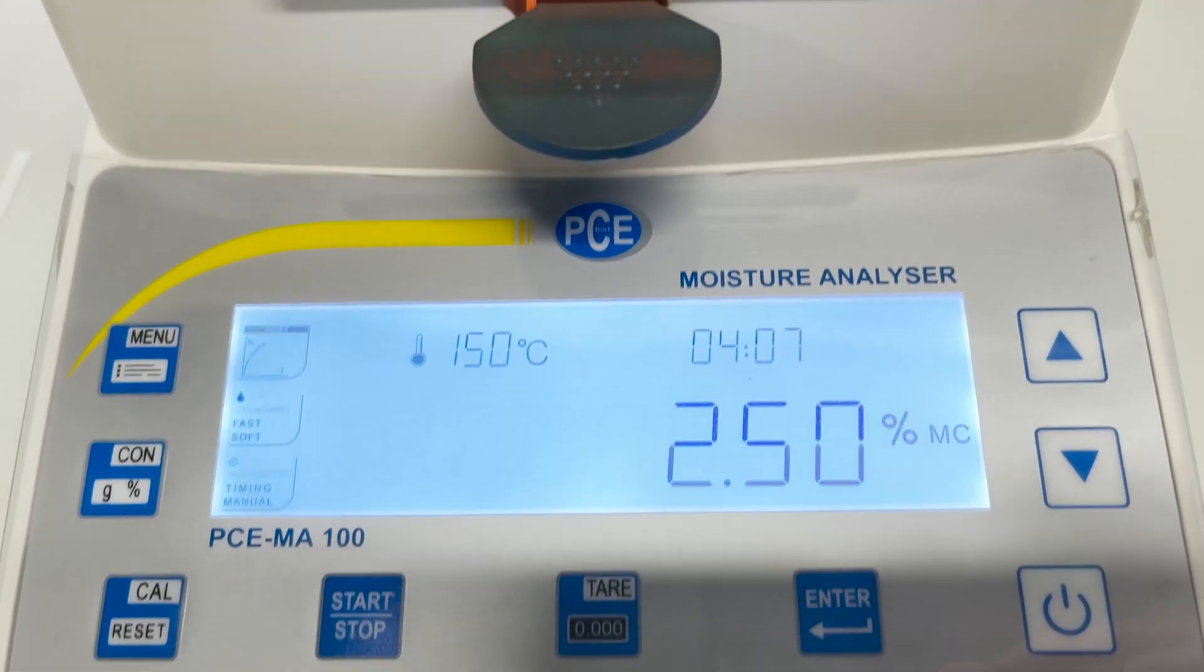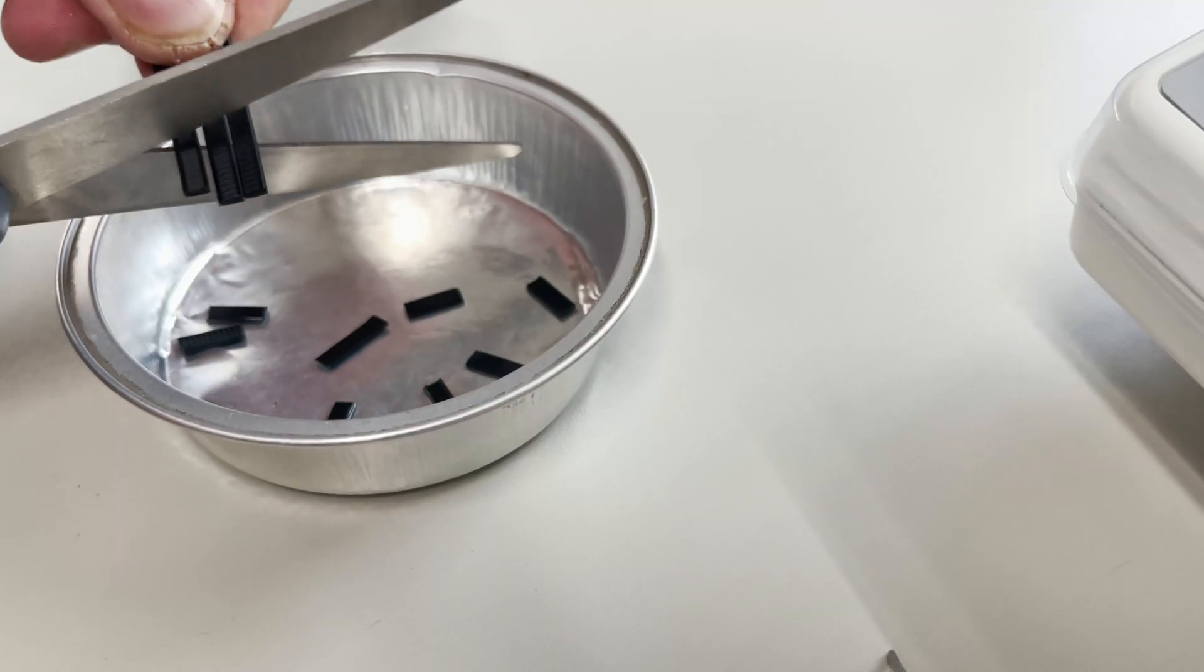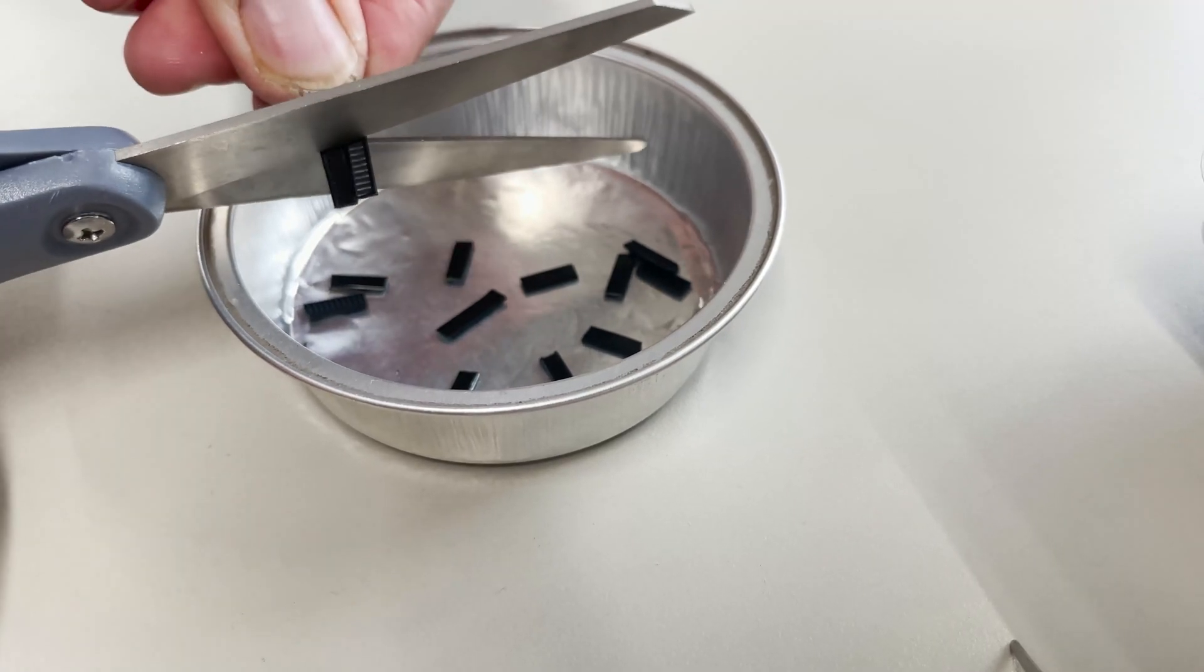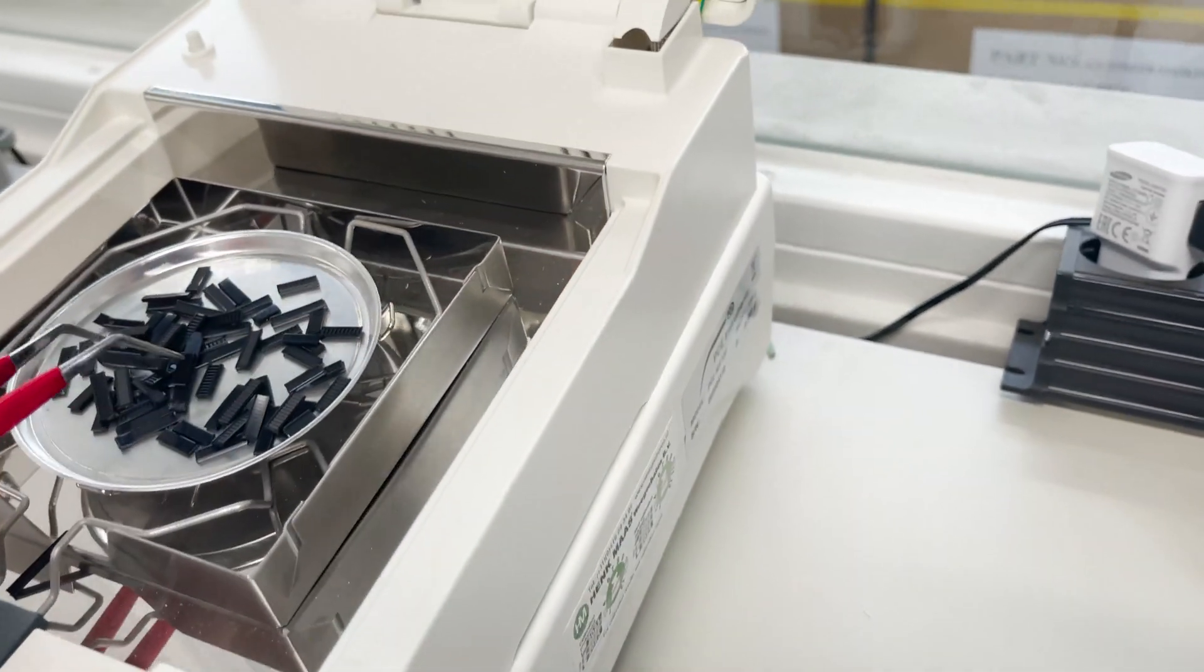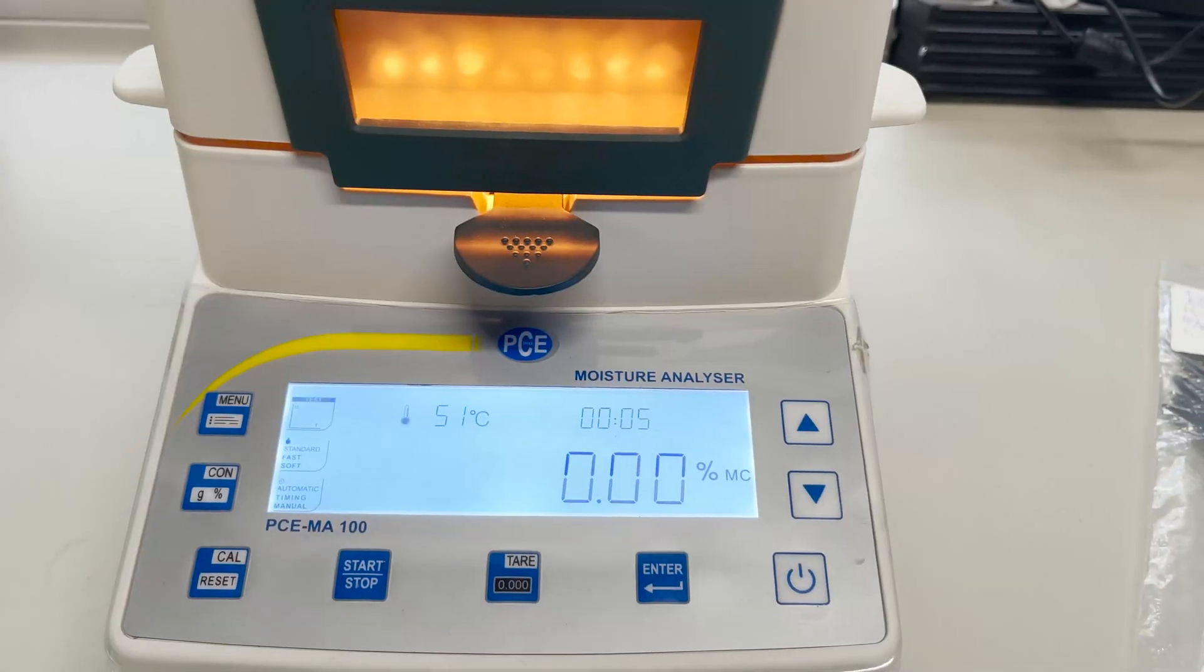To do this, we use an oven which is especially suited for these kinds of tests. When the moisture content in a cable tie is too low, the plastic becomes brittle and the risk of the cable tie breaking increases.